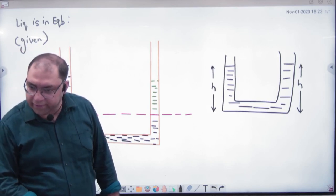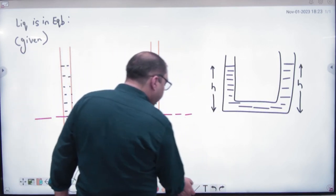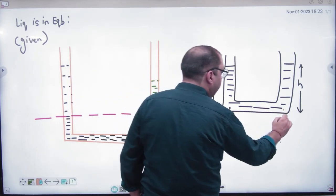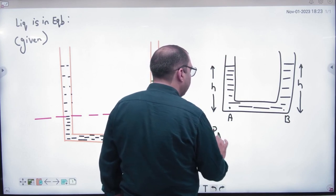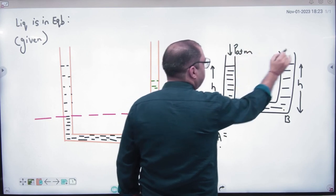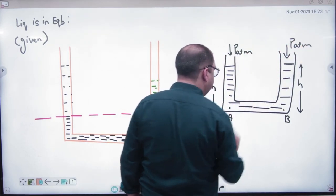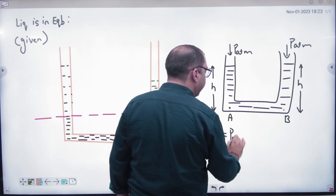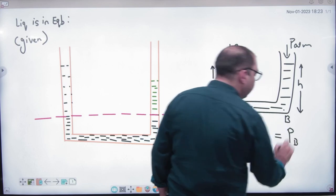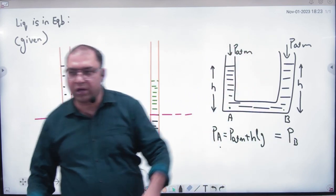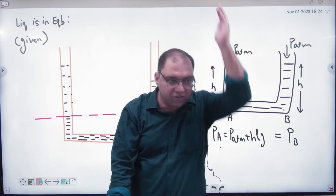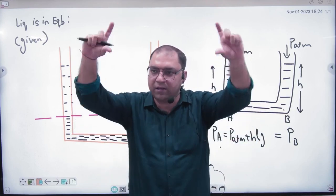The liquid is affected by gravity. If there is a point on the left surface and a point on the right surface, what will the pressure be at those points? Atmospheric pressure. And what will the pressure be at the bottom? Atmospheric pressure plus ρgH. If the liquid is on the same level on both sides, then the pressure on both sides will be exactly the same.